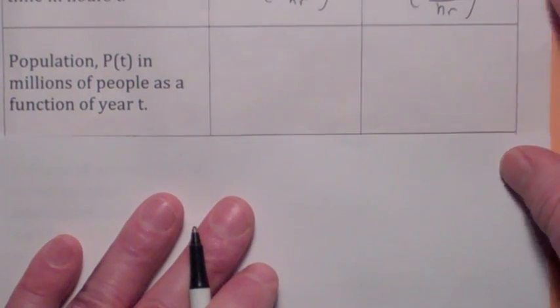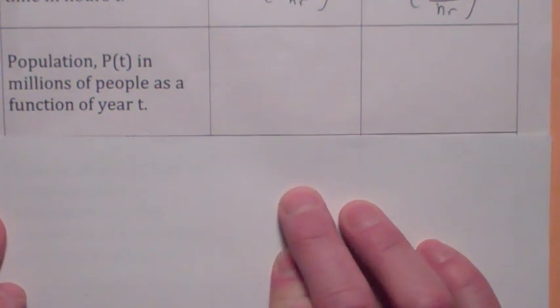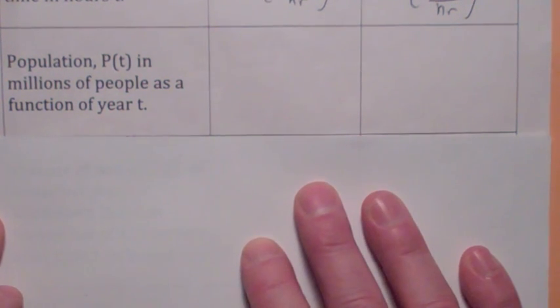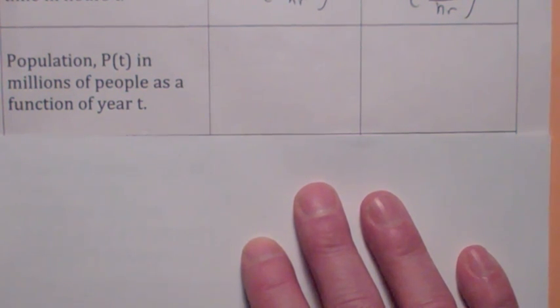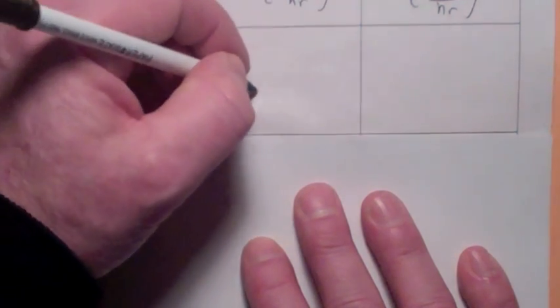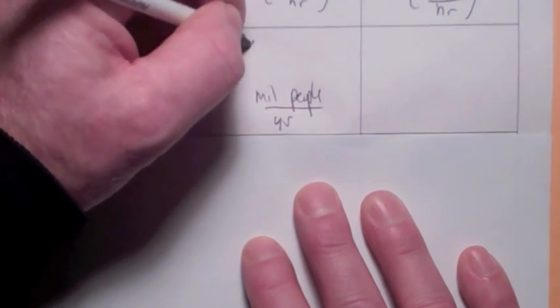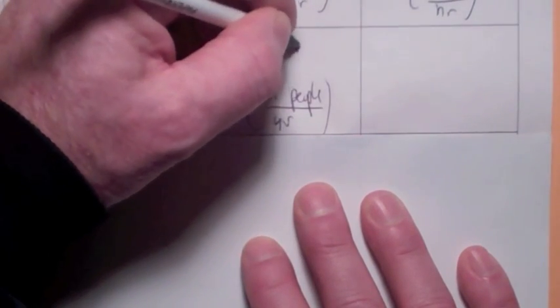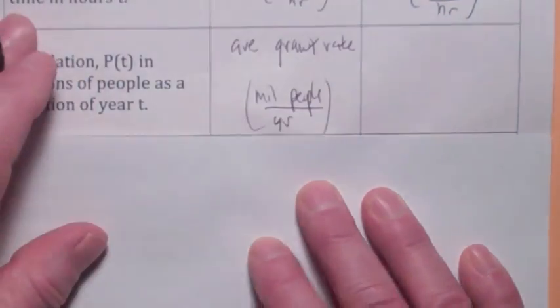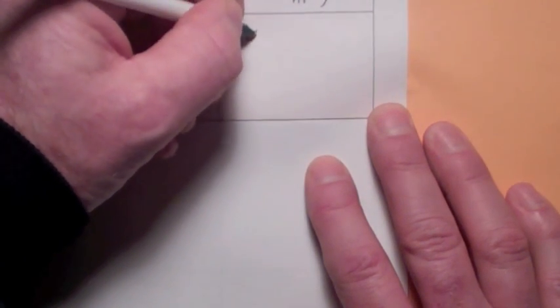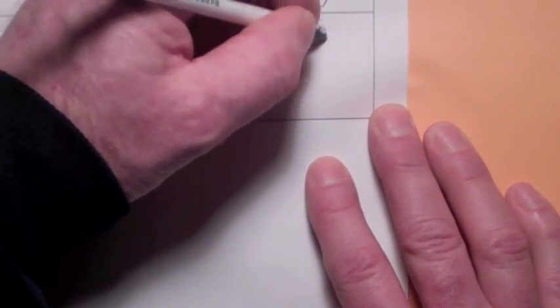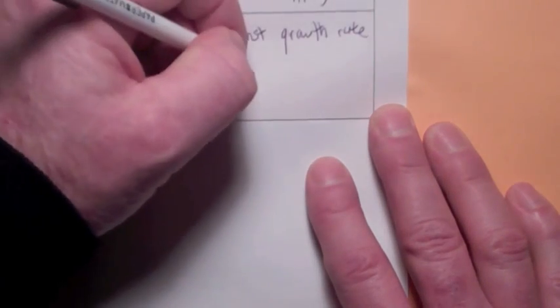What if the function is the population — people in millions — of a city after t years? Then what would the slope of the secant line be? Look at the units: the units would be millions of people per year. Isn't that the average growth rate? And then as the time interval gets small, the average growth rate is getting close to the instantaneous growth rate at a specific time. The units would be millions of people per year.